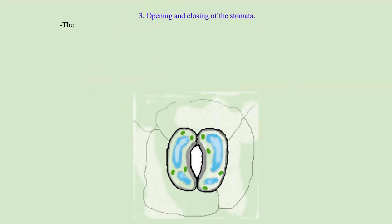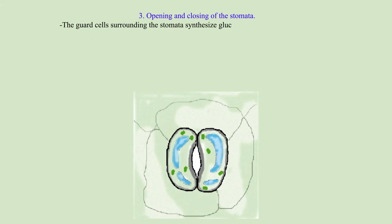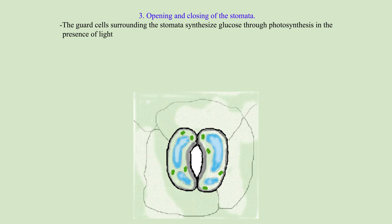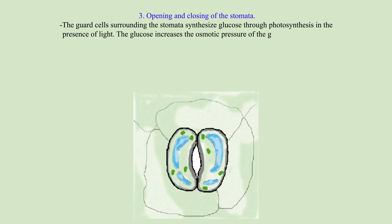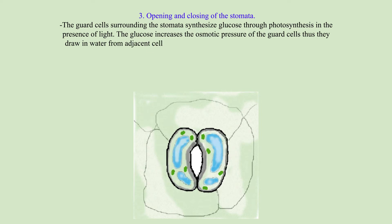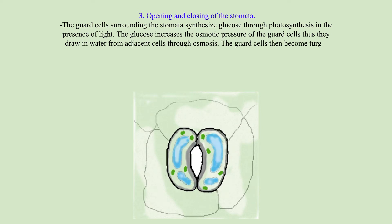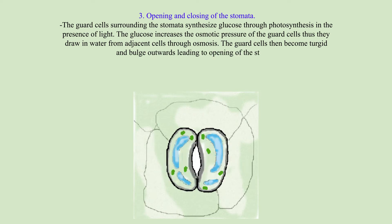3. Opening and closing of the stomata. The guard cells surrounding the stomata synthesize glucose through photosynthesis in the presence of light. The glucose increases the osmotic pressure of the guard cells, thus they draw in water from adjacent cells through osmosis. The guard cells then become turgid and bulge outwards, leading to the opening of the stomata.